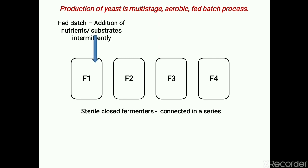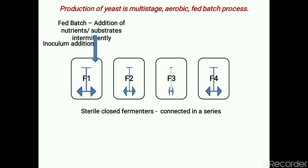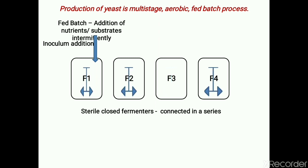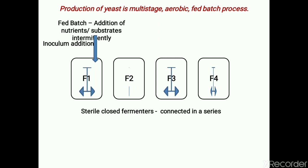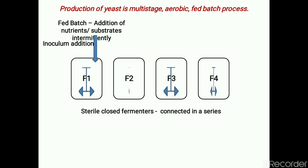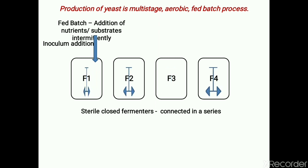In the first fermenter F1, one-third of sterile nutrient medium is added and then inoculated with the stock culture of yeast; the same process is repeated for F2, F3, and F4. Since it is an aerobic process, there should be vigorous supply of oxygen. If the supply of oxygen is insufficient, metabolism may divert towards fermentation, and instead of building up a huge biomass, there may be production of alcohol or alcohol-like substances.